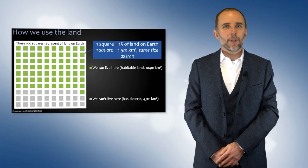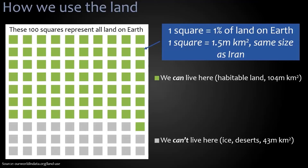First of all, how do we use the land? These 100 squares represent all of the land on Earth — each one is about 1.5 million square kilometres. The green ones are the habitable areas where we can live, while the areas in grey are where we cannot, such as ice and deserts.